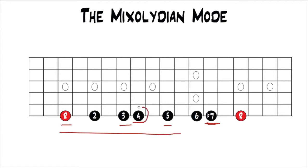Just like the Ionian mode, the natural four is your avoid note. And just like I've been saying, it doesn't mean don't play it — it just means don't typically land on it, because it's a very dissonant interval. The distance between the third and the natural four is a minor second, so when you're playing over a chord that has the natural third, it's going to be really dissonant. A major chord is a root-three-five, so playing the four over it is quite dissonant — it really wants to resolve back to the three or up to the five.